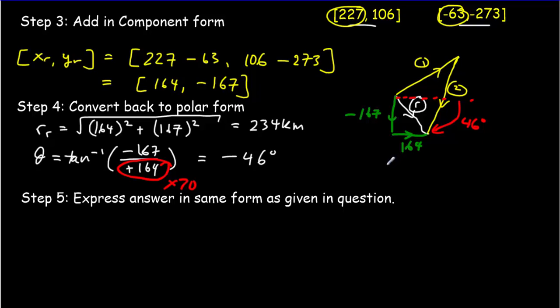So the last step is to express your answer in the same form as given in the question. So we know the resultant displacement is 234 kilometers. We just need to express it in that sort of standard format. So if we were to start at the direction of east and move 46 degrees towards south. There's east. There's south. So we want to move through 46 degrees here. That would be our final solution.